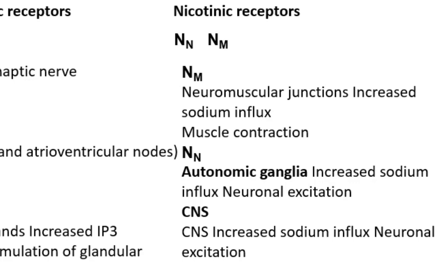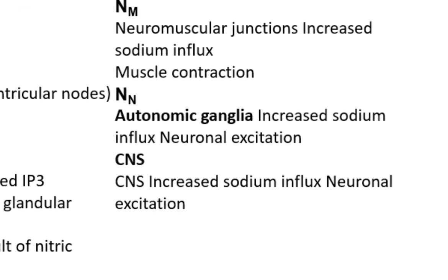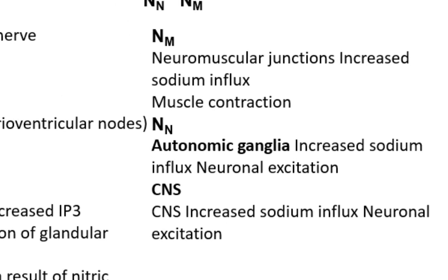At autonomic ganglia, activation of nicotinic receptors produces excitation of postganglionic neurons, leading to the release of neurotransmitters at postganglionic neuroeffector junctions. At junctions of somatic nerves and skeletal muscle, activation of nicotinic receptors depolarizes the motor end plate and leads both to the release of calcium from the sarcoplasmic reticulum and to the contraction of muscles. In the brain, activation of nicotinic receptors causes excitation of presynaptic and postsynaptic neurons.